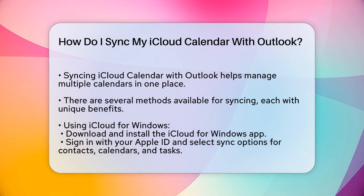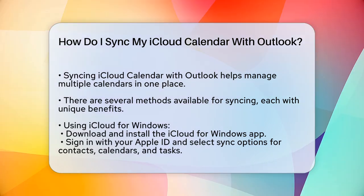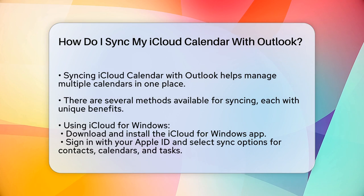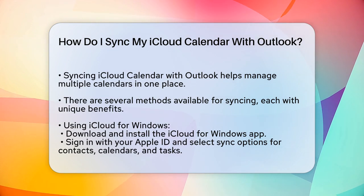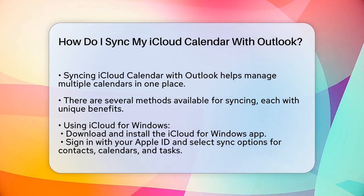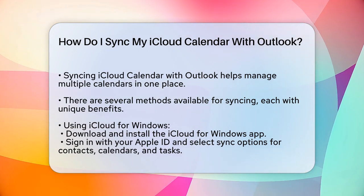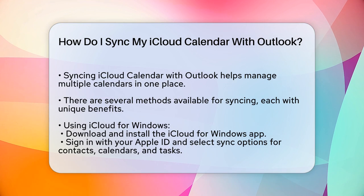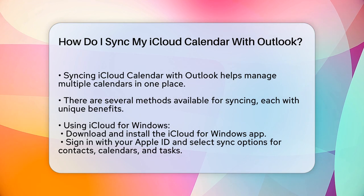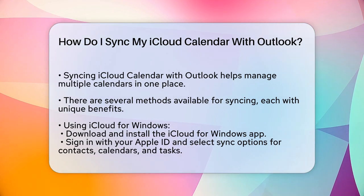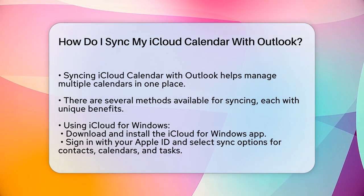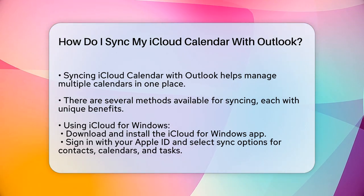First, you have a few methods to choose from, each with its own advantages. Using iCloud for Windows — one of the simplest ways to sync your iCloud calendar with Outlook is by using the iCloud for Windows app. Here's how you can do it.